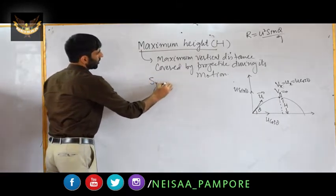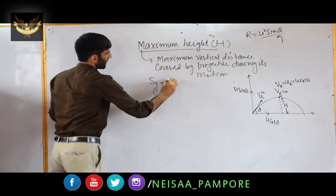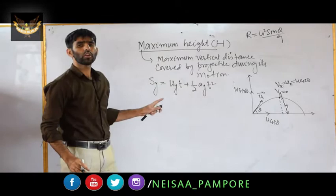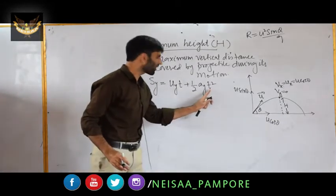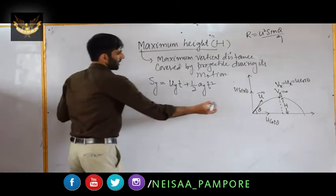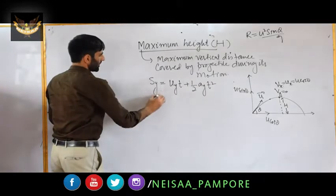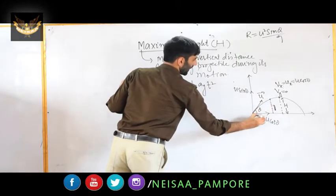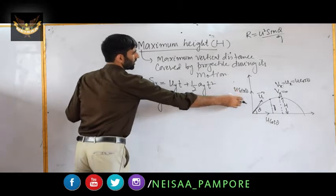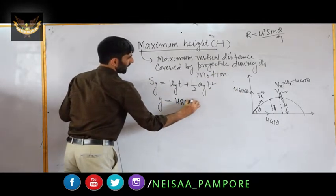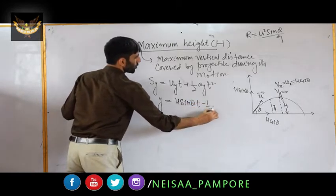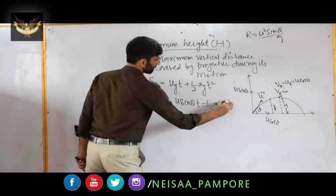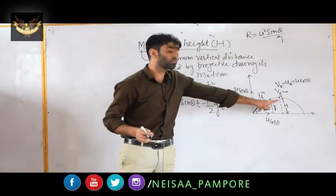To derive maximum height, we use the kinematic equation: s_y = u_y·t + (1/2)·a_y·t². At any point P, the vertical distance is y, so y = u sin θ · t − (1/2)g·t², taking downward as negative. At the highest point, the vertical distance y equals H.